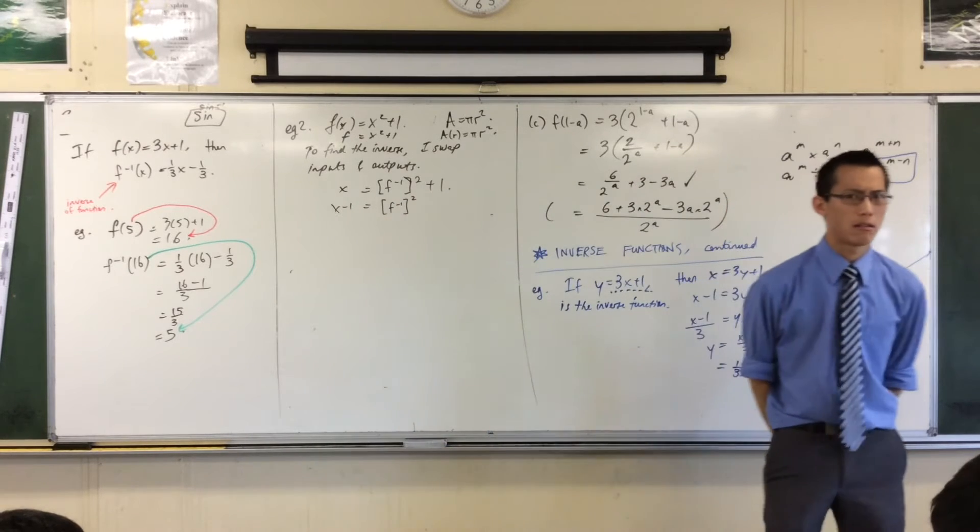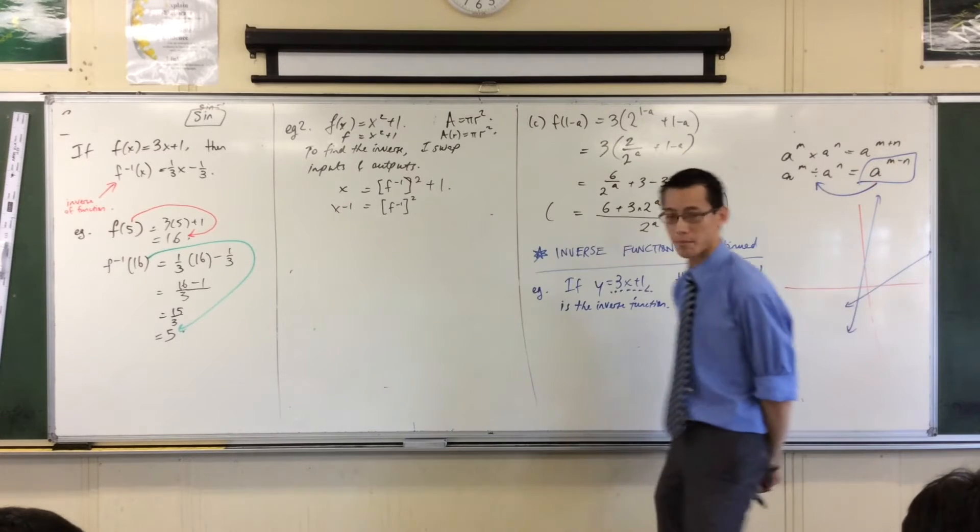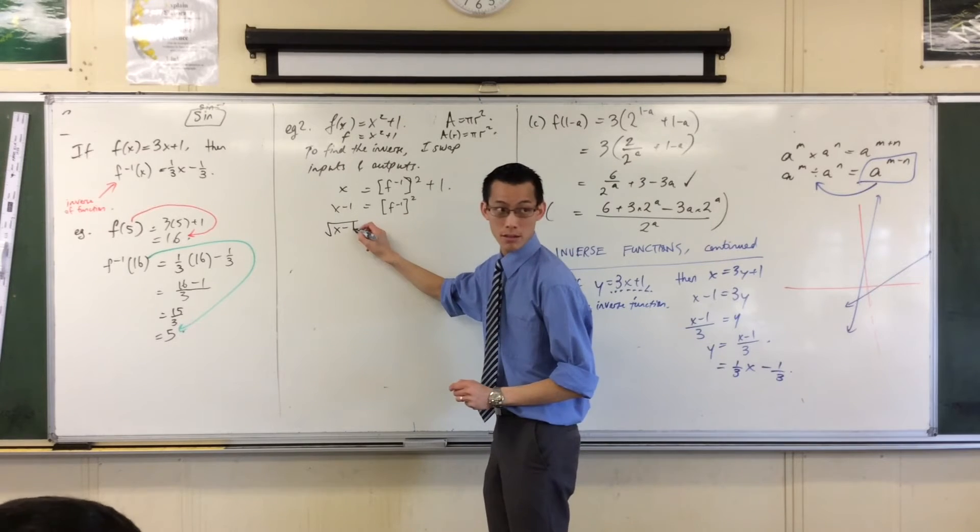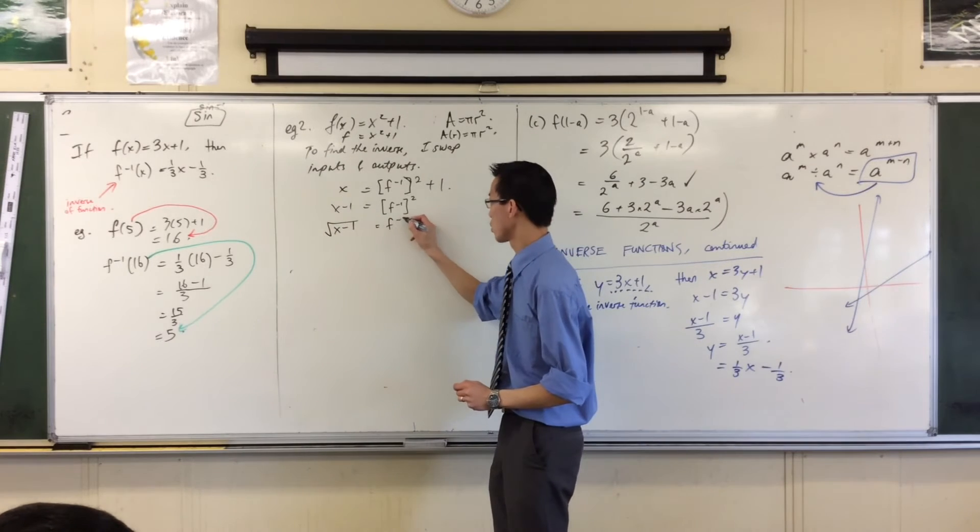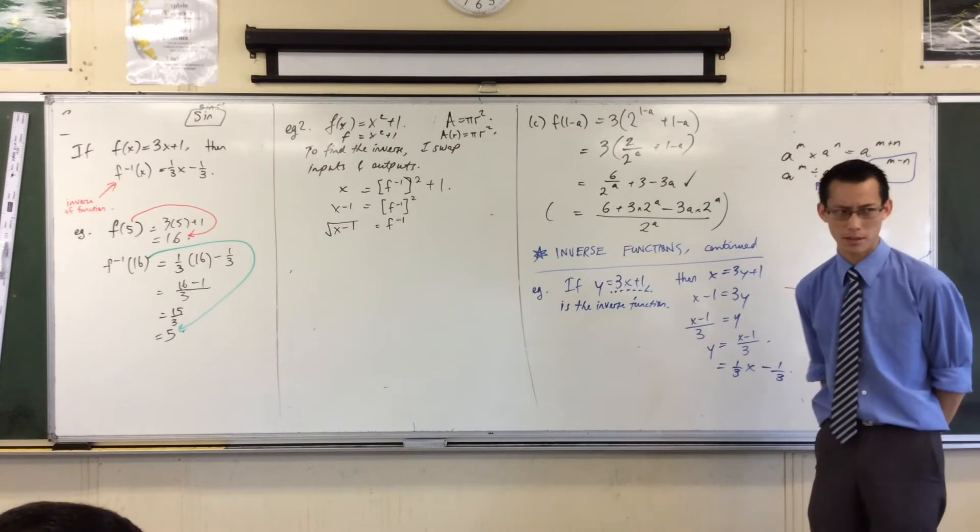What do I do now? Yeah, the opposite of squaring is taking the square root, but watch out, right? Taking the square root will look like this. Taking the square root over here will look like this. But something's missing, something's missing, isn't it?